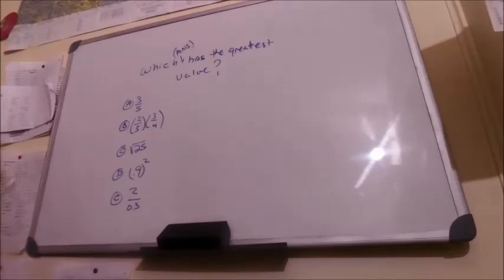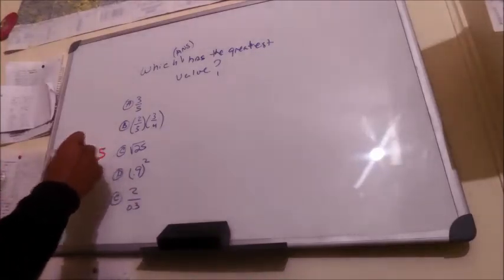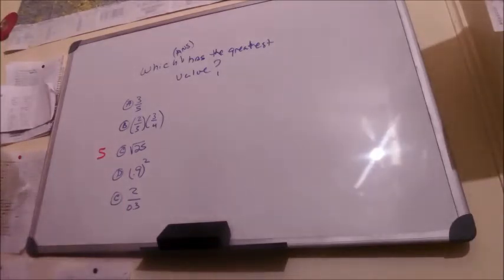Okay, so what I'll start doing is get some other colors involved here. For C, I can just look at that—that is 5. Square root of 25 is 5.